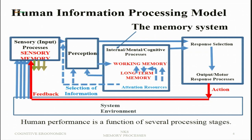Just to recall the information processing model and where exactly working memory and long-term memory belong: primarily there is a reception of information by the sensory receptors from the environment. Then this information is attended to, where attentional resources are provided by working memory. Working memory and long-term memory constitute a memory system which represents information internally — these are the internal mental or cognitive processes involved in the memory system. Finally, there is response selection. The primary focus will be on working memory and long-term memory, with a brief discussion of sensory memory.